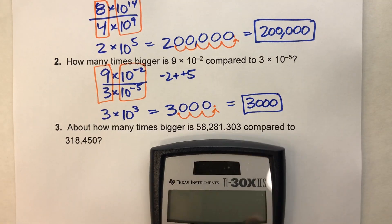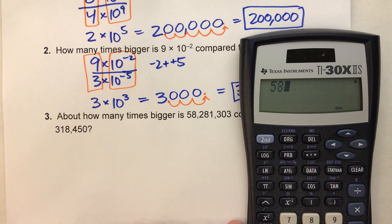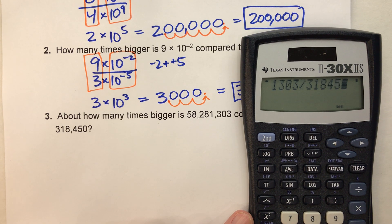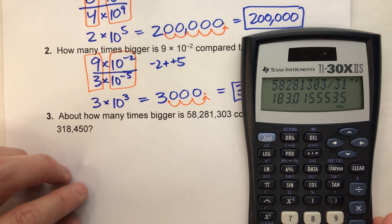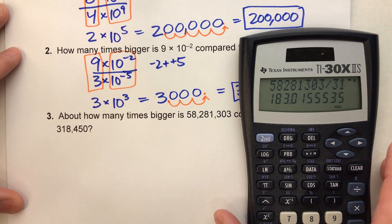And I mean, I could use a calculator to get this. Let's see what the calculator says, 58,281,303 divided by 318,450, 183.015. So that's pretty complicated. But it turns out...